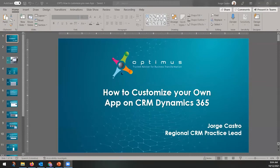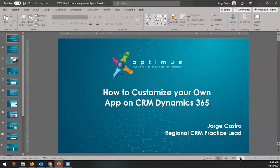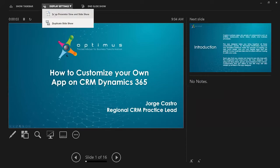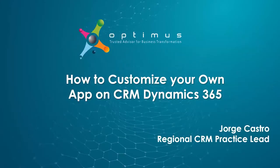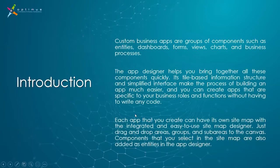Good morning everyone. Today we are going to talk about how to customize your own app in CRM Dynamics 365. A custom business app is basically a group of components like entities, dashboards, forms, views, charts, and business process flows — you just group everything that you need in a specific app.